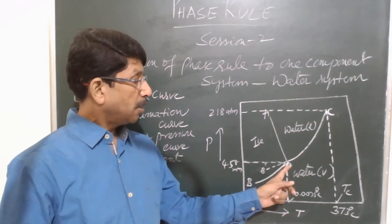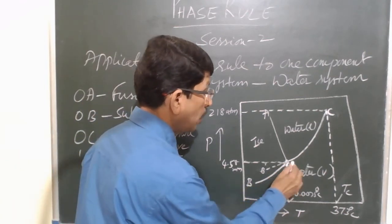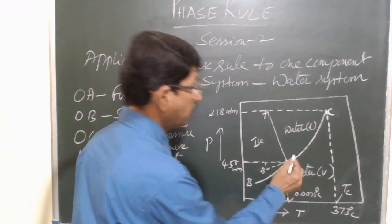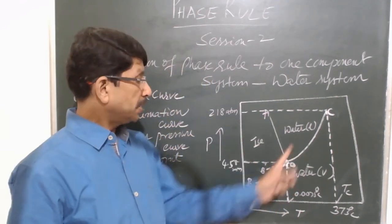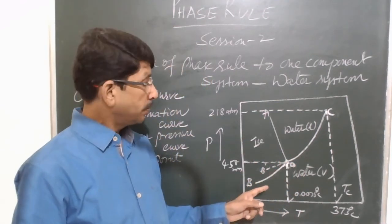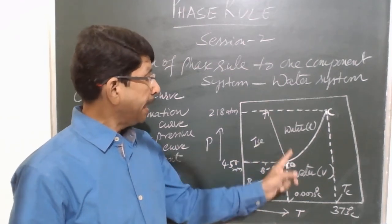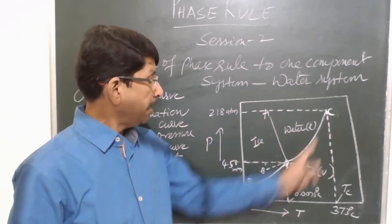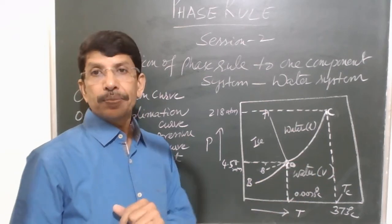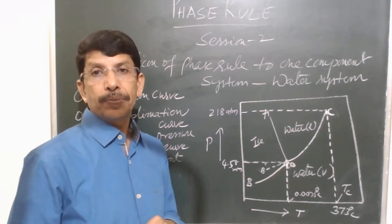Here we have a triple point denoted by O. The curves are OA, OB, OC, and OB'. The areas are AOB, AOC, and BOC. And O is the triple point. In any typical phase diagram we have to explain the curves, areas, and triple points — or eutectic points when we come to two-component systems.